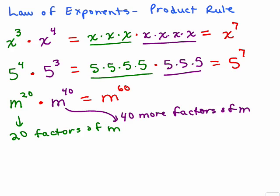So does anybody see an easy way to do this without having to write out what it is each time? Here it is, the first law of exponents called the product rule, B to the M times B to the N.